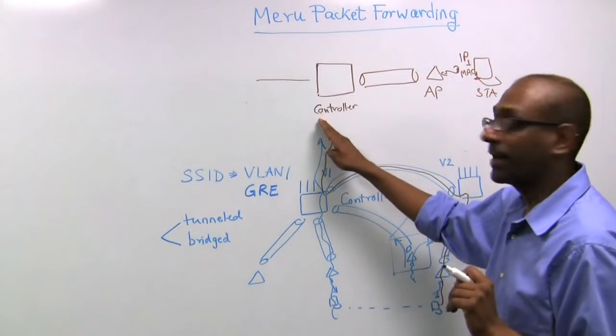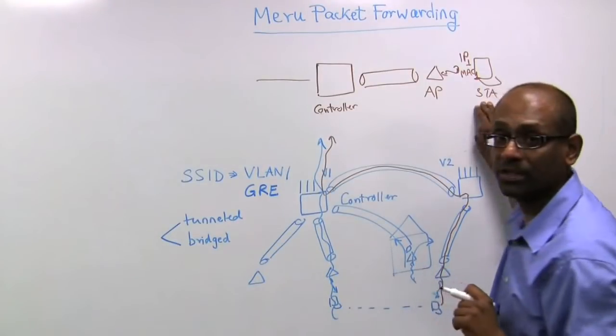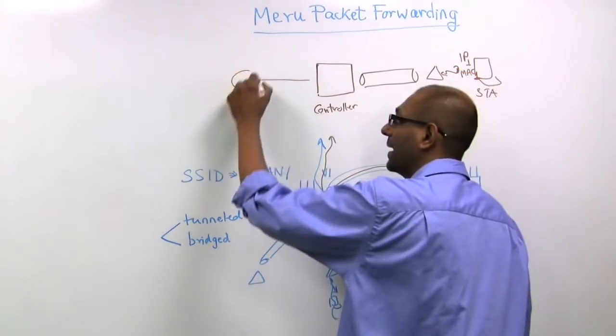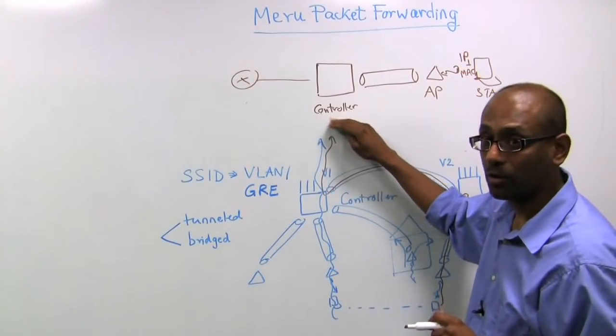Do the packets look like they're emanating from the controller, or do they look like they're emanating from the station? In other words, from the perspective of the back-end network, is the controller a switch, a router, or a bridge?